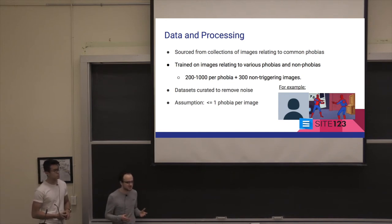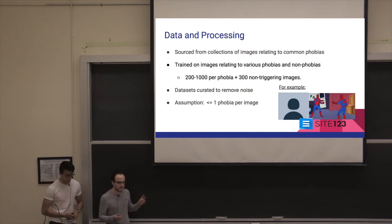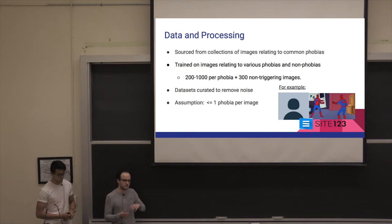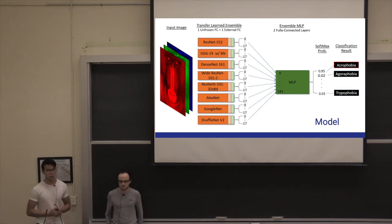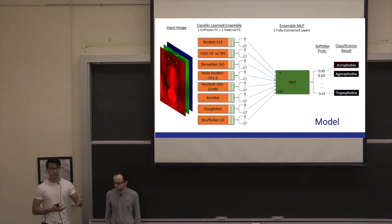Our model works on the simplifying assumption that each image can only trigger one phobia at most. The model architecture is based upon a transfer learning ensemble. The input image is 128 by 128 resized with three channels RGB. We have used eight different unique transfer learned computer vision models including ResNet, VGG, DenseNet, AlexNet, ShuffleNet, etc.